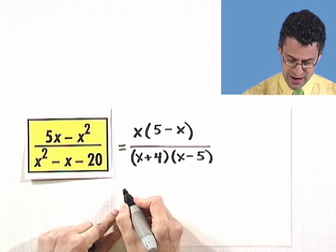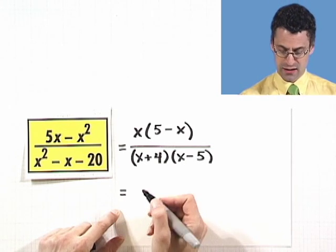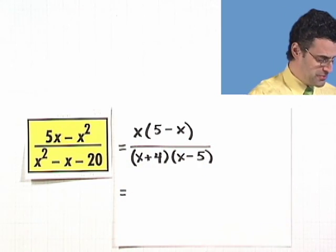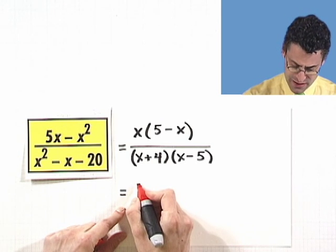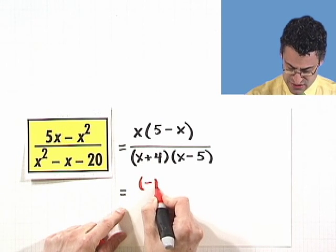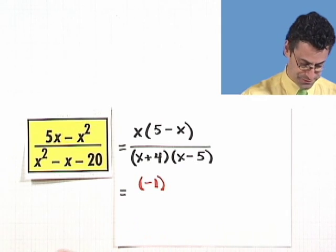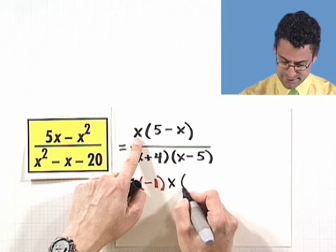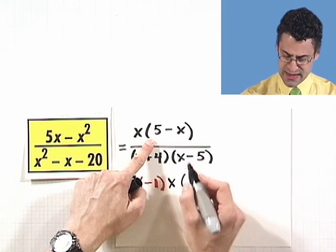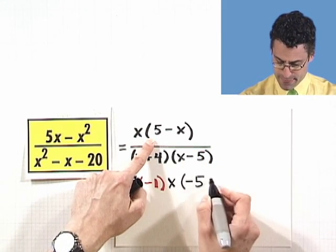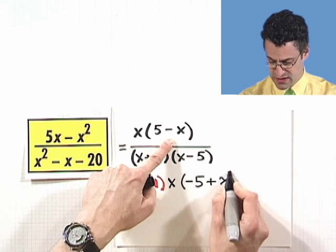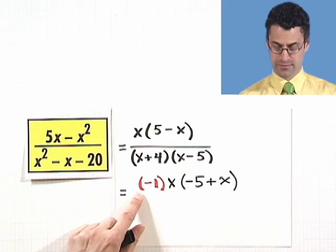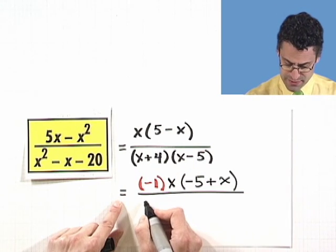So let me factor out a negative 1 from here. If I do that, all that really means, by the way, just between us, is you change all the signs. So I factor out a negative here. What I see here is this is going to become a negative 5. And that's going to become a plus x. Check it out for yourself. Take the negative 1 and distribute. It changes the sign. It changes the sign. I get back to here. It's still over that same bottom.